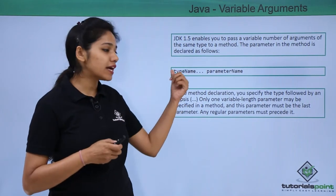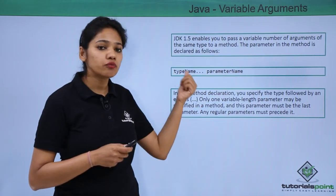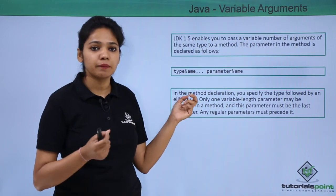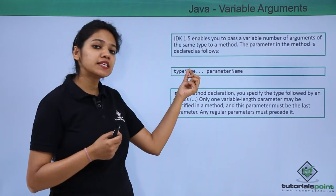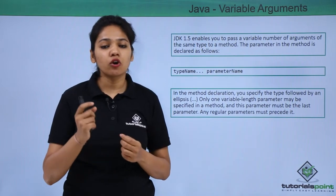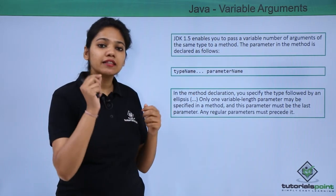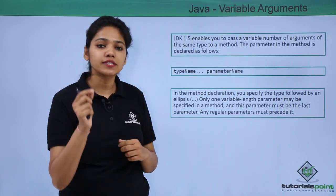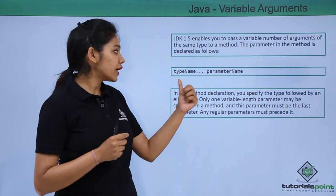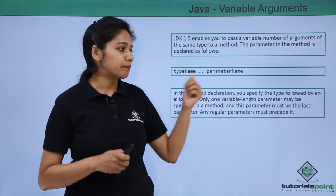You do not have to define the length of the argument. The syntax is similar to how you define a variable — you write the data type, then three dots, followed by the variable name. These three dots are called ellipses in Java. So you write: data type, ellipses, then your variable name.